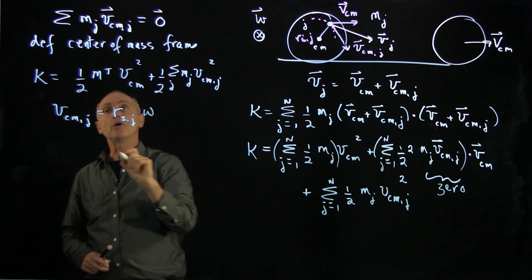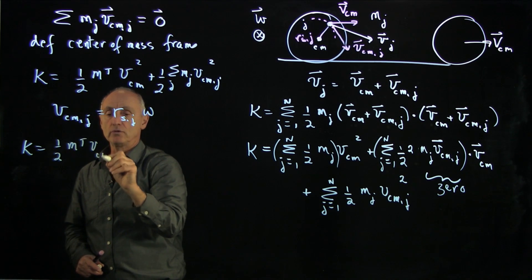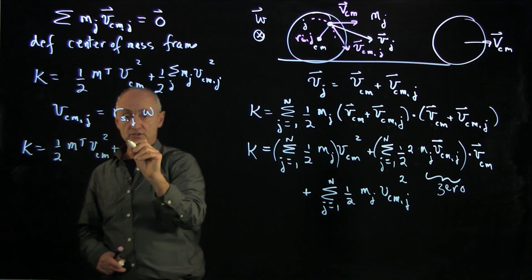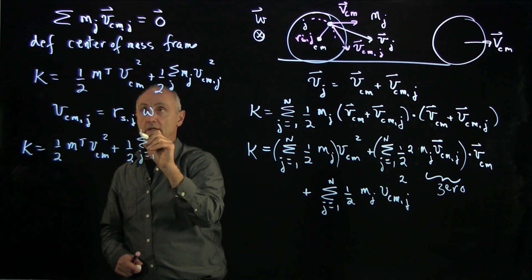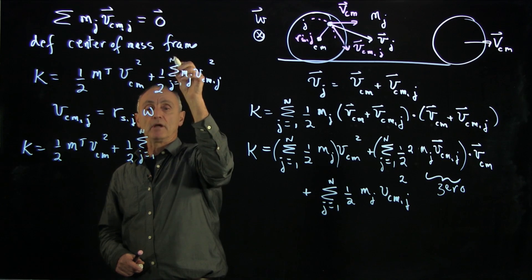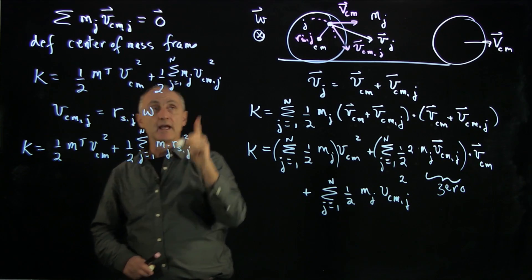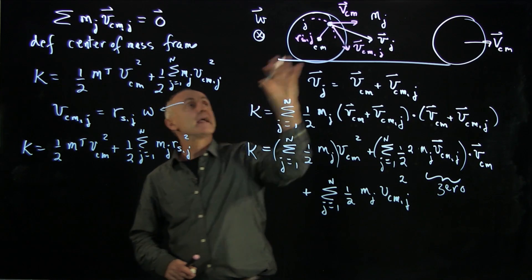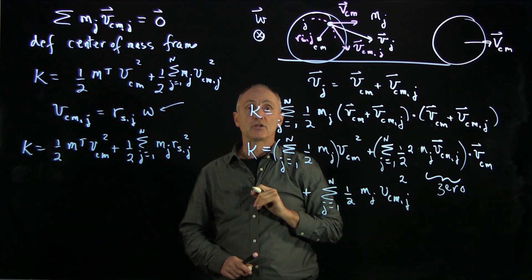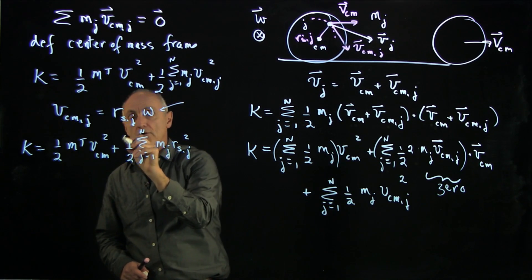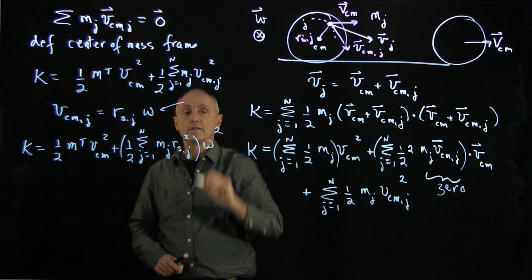And when we put that into this term, we see our kinetic energy has two pieces: m total vcm squared plus 1/2 j goes from 1 to n. I didn't finish that sum there. mj rsj squared. Now, just remember that every single point in the object has the same angular speed. And so we can pull out the omega squared in there.